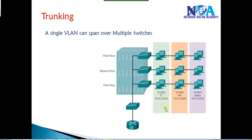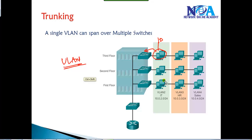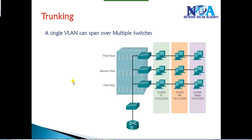The next concept after VLANs is trunking. In this section, we are going to deal with the same concept of VLANs, but what if some users of VLAN 10 are connecting on switch one and some other users of VLAN 10 are connecting on a different switch? We are going to see how traffic flows between the same VLAN users on different switches — that is where the concept of trunking comes into the picture.